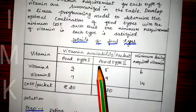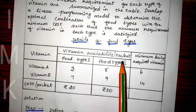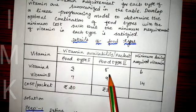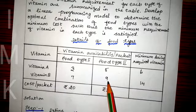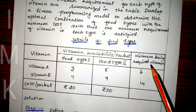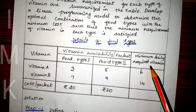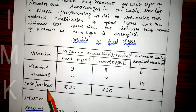In the tabular column, the details of food types are given — food 1 and food 2. The vitamin availability for each food type is given, the minimum daily requirement of each vitamin is also given, and the cost per packet is also given.